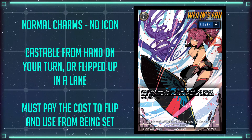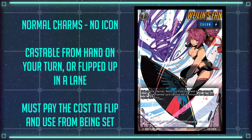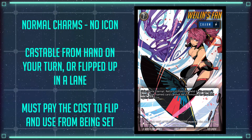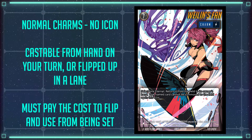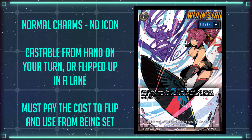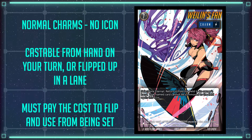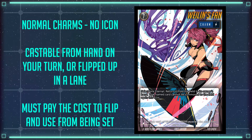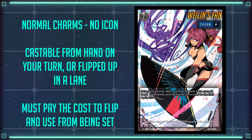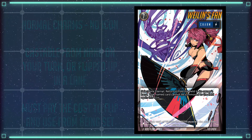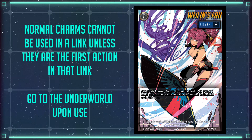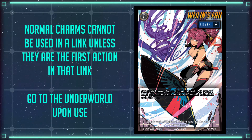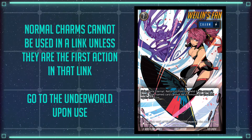Normal charms have no special icon, and these can generally only be used on your turn by casting them from your hand or flipping them face up in a lane. You can set normal charms for use later, but any time you play a charm you must be able to play its cost. Normal charms cannot be used in a link unless they are the first thing in the link, and they go to the underworld after resolution of the link.